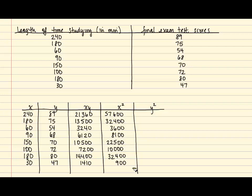Finally, we're going to square the y values, taking each y and literally squaring them. Our first y is 89, and if we take 89 squared, we end up with 7,921. Next, if we square 75, we get 5,625. And you will repeat this process until you square all of the y values.